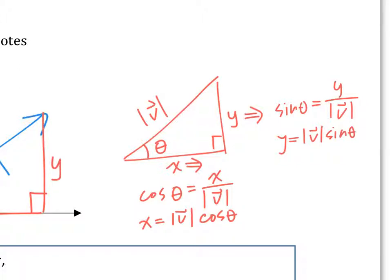This is pretty much the same idea as the unit circle. We said in the unit circle, the x direction is always cosine and the y direction is always sine. Same thing here: the x direction has to do with magnitude times cosine, and the y direction is magnitude times sine.